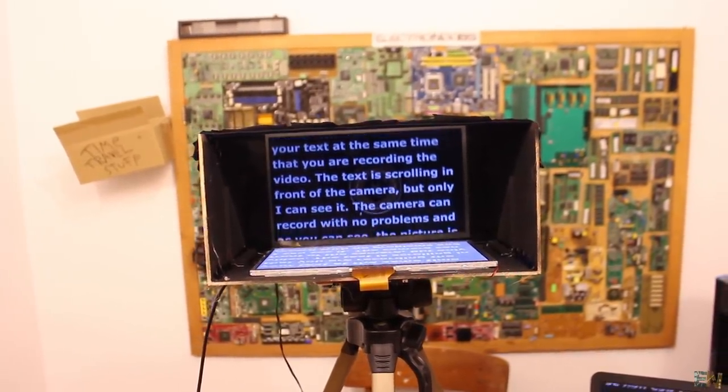As you can see, the text is scrolling in front of the camera, but only I can see it. The camera can record with no problems and as you can see, the picture is very clear.